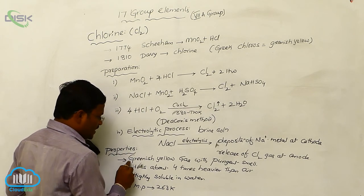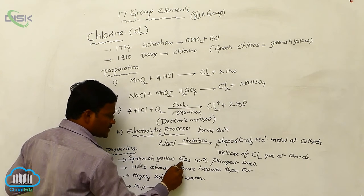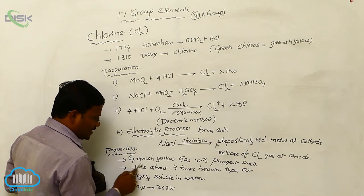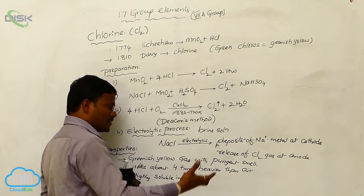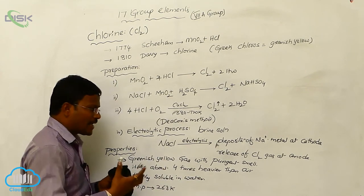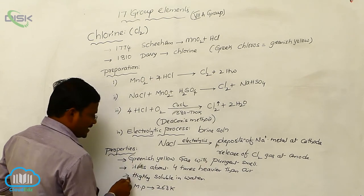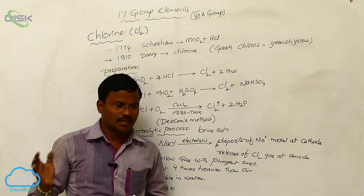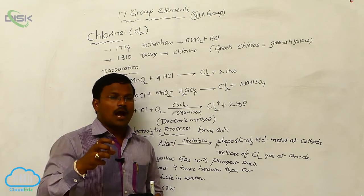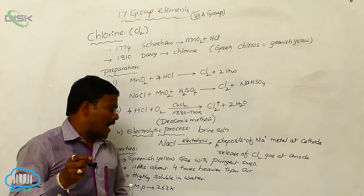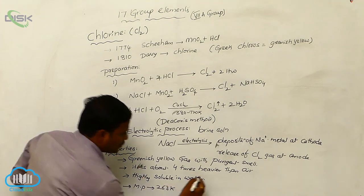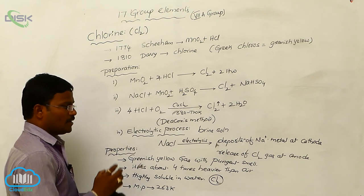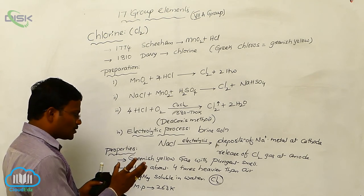Once again, chlorine is a greenish-yellow gas with pungent smell, which can produce some fumes. And it is about 4 times heavier than the weight or mass of chlorine gas, about 4 times heavier than air. And it is highly soluble in water. The same thing in case of, as we told in case of sulfuric acid, when chlorine is dissolved in water, it produces some heat. It seems to be somewhat exothermic in character.